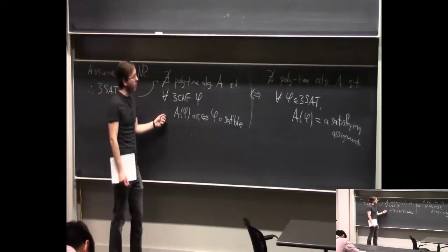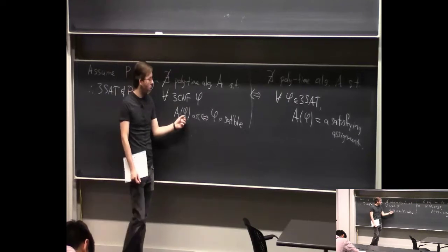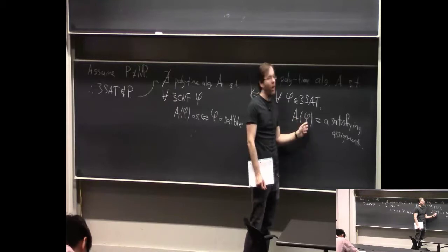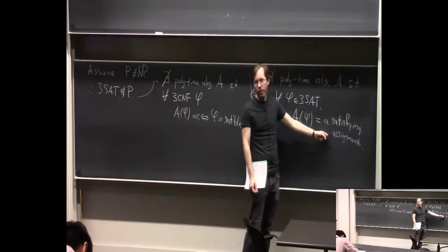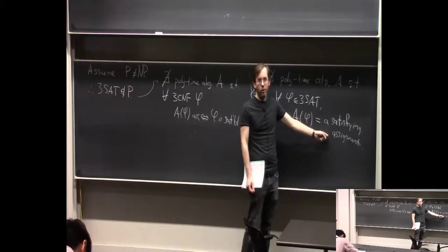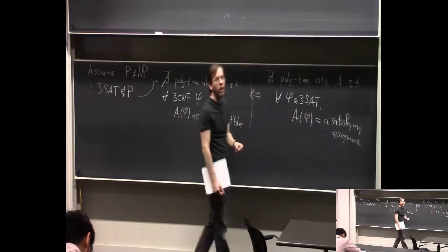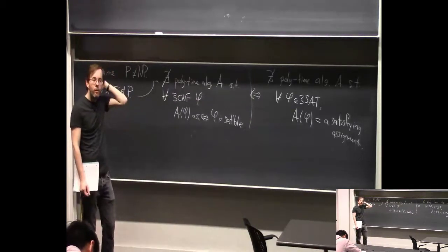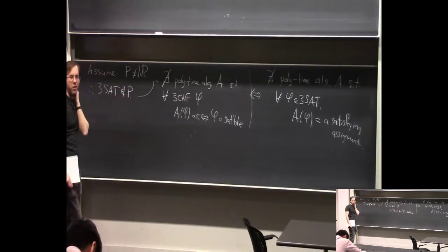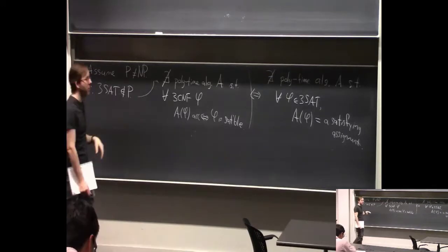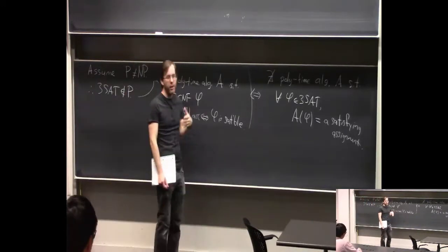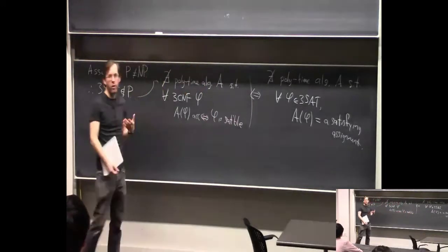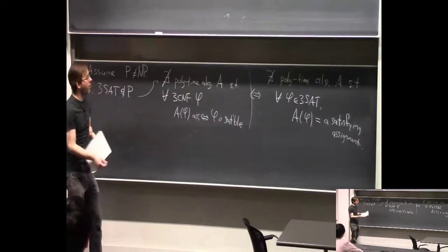Conversely, suppose you have an algorithm that can just tell yes or no whether a formula is satisfiable — how do you get an algorithm that, given a satisfiable formula, outputs a satisfying assignment? You use one variable at a time. It's the search-to-decision reduction: if you can tell yes or no, you try setting the first variable to be true or false, see if the thing is satisfiable, and that tells you a good way to set it. Go on to the second variable, et cetera.